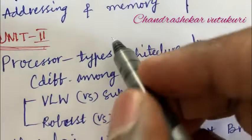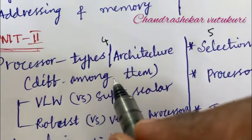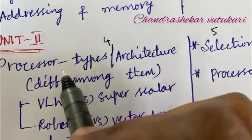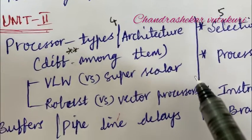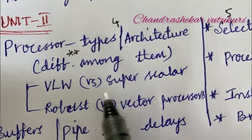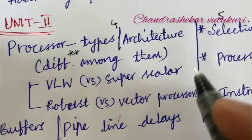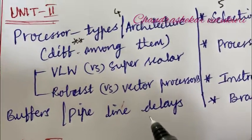Now the second unit questions are related to the fourth as well as the fifth. The processor types and architecture along with the differences among them is one of the topmost questions for sure. You may be getting any type of processor. You are not supposed to skip any processor here like VLIW versus super scalar, RISC, vector processor, and buffers.